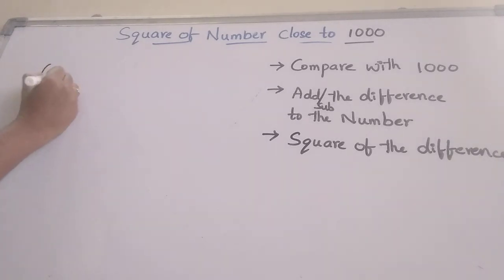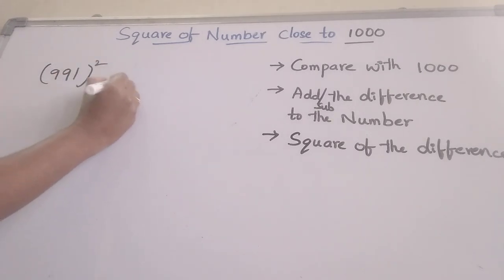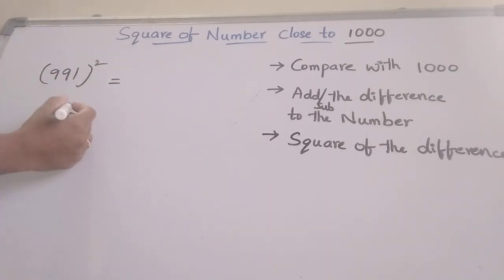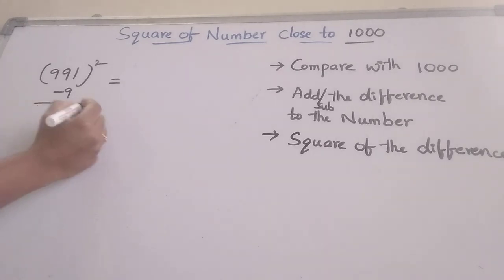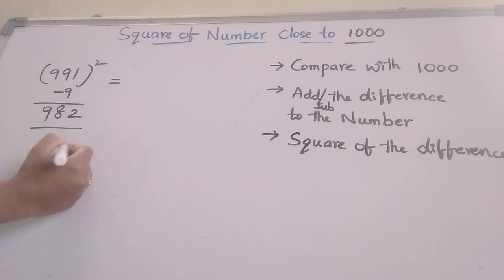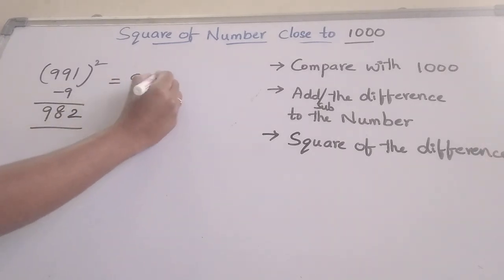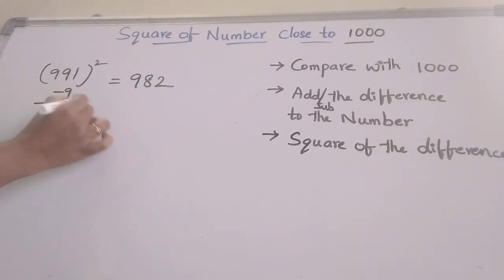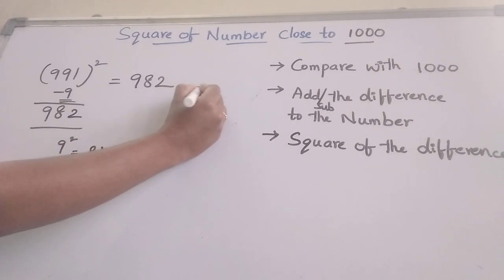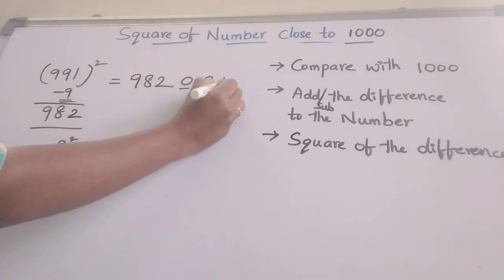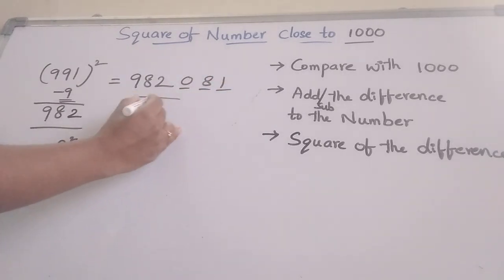Finding the square of 991. First, compare with 1000 — that should be minus 9. We can subtract this 9 from this number, giving 982. Write 982 here. What is the square of 9? 9 squared is 81. We take 3 blanks here and write 081. This is the answer.